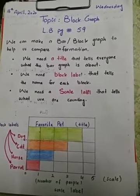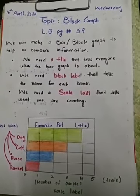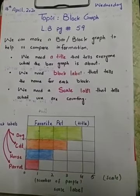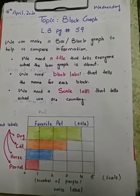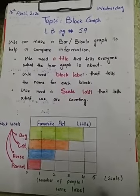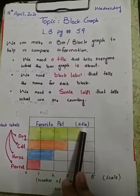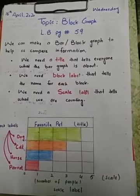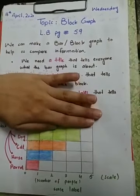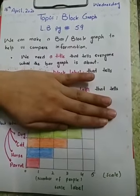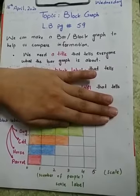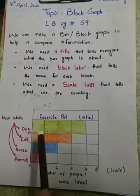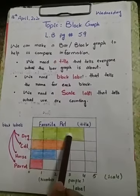We can make a block graph to help us compare information. What we need to make a block graph — we need a title that tells everyone what the bar graph is about. Here is the title. If I hide it, how can you know what we are going to discuss in this bar graph? So this title is very important.